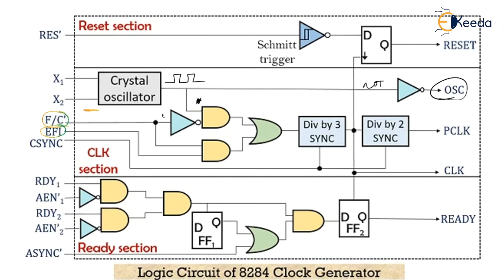When F/C is high, EFI is fed to the counter. Timing signals for the ready and reset pins are produced by the counter. For the operation of EFI, input synchronization between multiprocessor systems is necessary, for which the CSYNC signal is used. When the crystal oscillator decides the operating frequency, the signal is subject to the divide-by-3 operation.